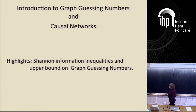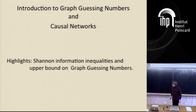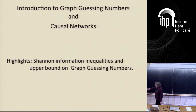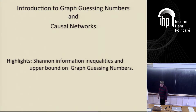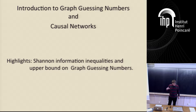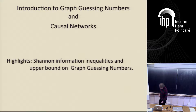In this first part of the session, I will talk about graph guessing games — graph guessing numbers, actually — and then causal networks. The highlight will be a result that Shannon's information inequalities are insufficient to give perfect upper bounds on these guessing numbers.